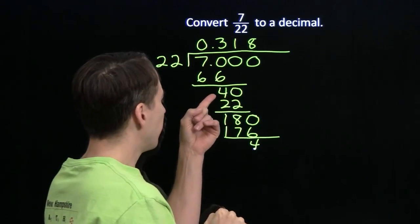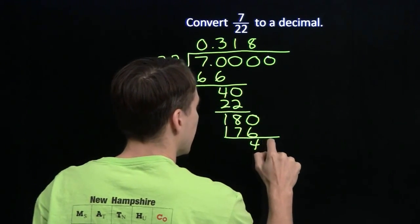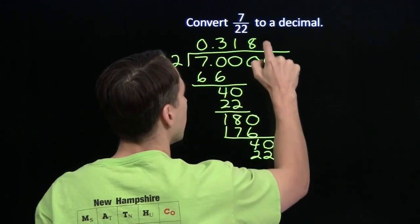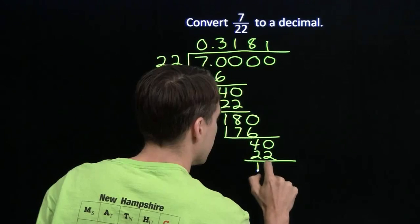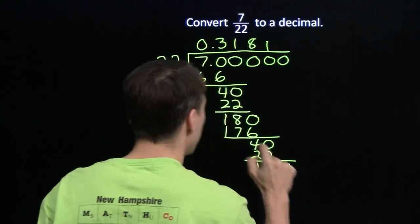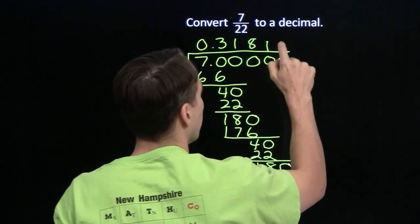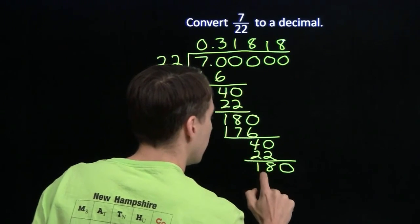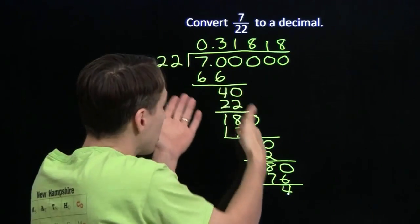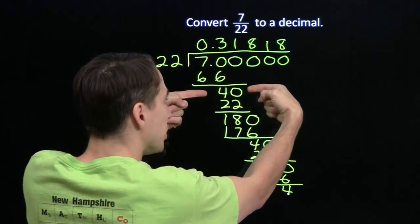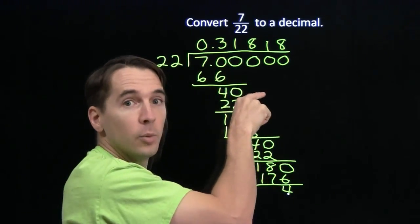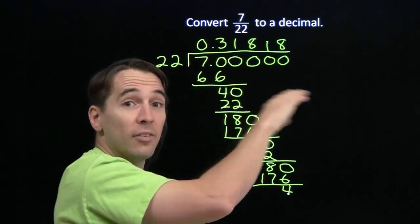Just like we did before — we had 4 left over before, so if we bring that 0 down, we know that's going to go in 1 time, and that'll leave us 18 left over, just like we had before. So if we bring down a 0 again, we know that 22 goes into 180 — we've already done that, it's going to go in 8 times, gives us 176, 4 left over. And on and on and on. Once we hit the 40 again, we see that we're going to repeat 1-8, 1-8, 1-8 forever and ever.